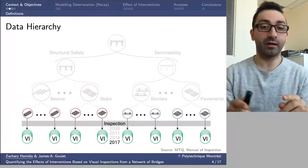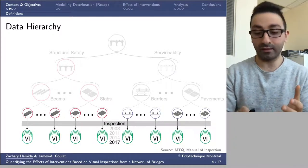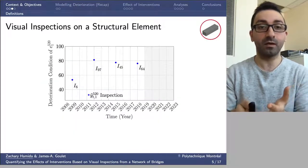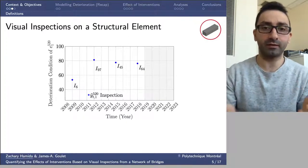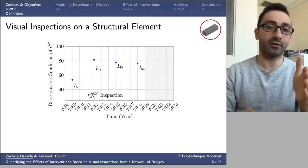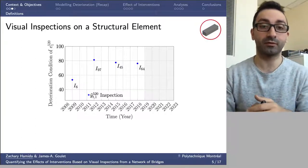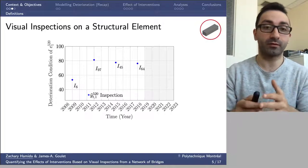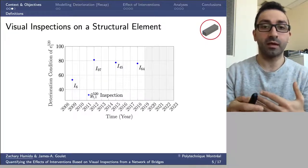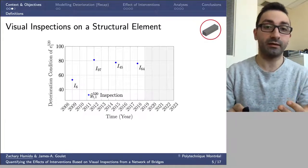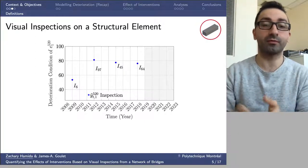Let's look at an example of a time series with visual inspections and interventions. On the x-axis, we have the timeline on a yearly scale. On the y-axis, we have the condition ranging from 25 for the worst condition up to 100 for perfect condition. The inspection data are reported by the blue points, and each blue point is associated with an inspector who has a unique ID. Different inspectors have performed the inspections over time.